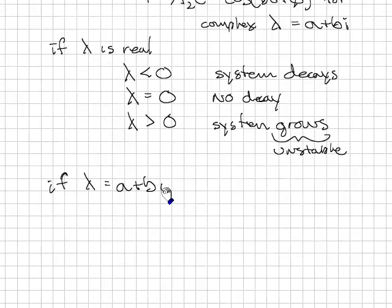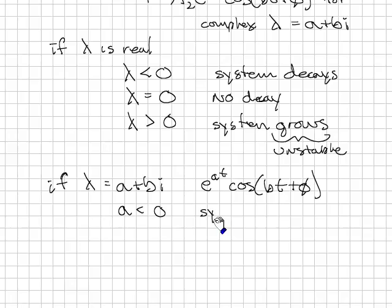If lambda equals a plus bi, then we have a similar case. If a is less than 0, then the response looks like e to the at cosine of bt plus phi. A is less than 0, system decays. Just as we had here, that's because cosine just varies between 0, minus 1, and plus 1. This is a multiplier in front of it, so it's essentially scaling this value. So as this value gets smaller and smaller, the whole value gets smaller and smaller. Similarly, if a equals 0, pure oscillation. If a is greater than 0, system grows.